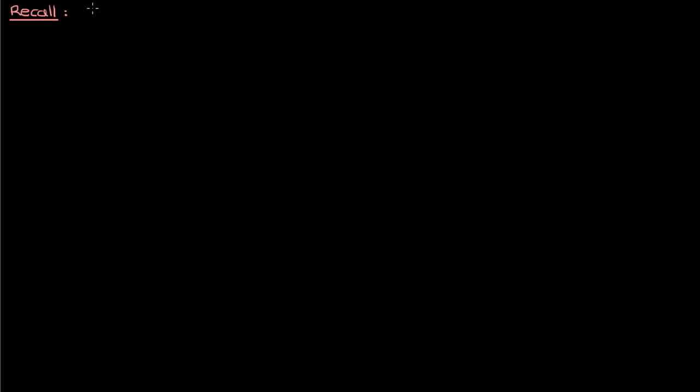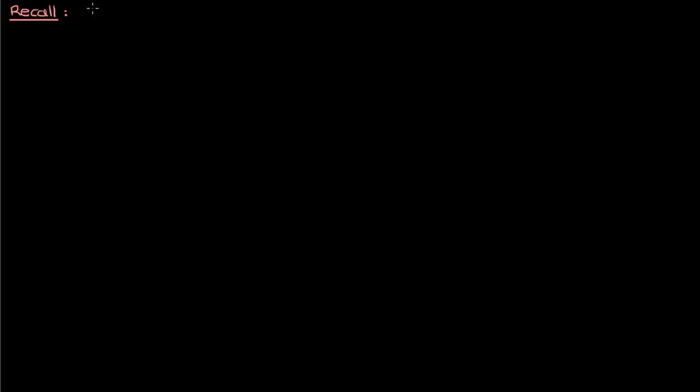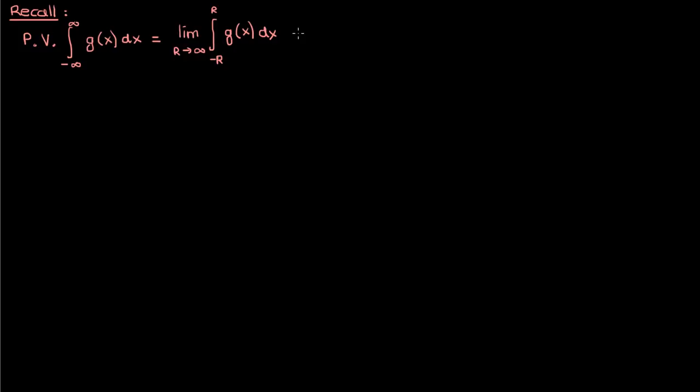Now what does this principal value term mean? If you recall my video on the improper integrals in the residue theorem, you'll remember the Cauchy principal value. The Cauchy principal value of an improper integral from negative infinity to infinity of G(x) dx is found by replacing the infinite upper and lower bounds by some parameter R, and then taking the limit of the entire integral as R approaches infinity. It's especially useful for some improper integrals that diverge, because the Cauchy principal value can assign a number to an integral which would otherwise diverge. This formula applies when there's a singularity at infinity, but if there's a singularity at some finite number B in some function H(x), we can modify the expression for the Cauchy principal value.